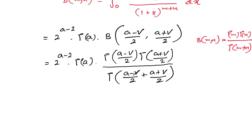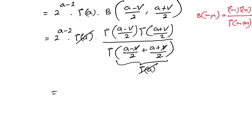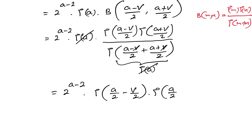The Γ(a) terms cancel, leaving the final answer: 2^(a-2) · Γ(a/2 - v/2) · Γ(a/2 + v/2). This is the required closed-form result for the integral. If you like this type of video, please subscribe to the channel. Thank you for watching.